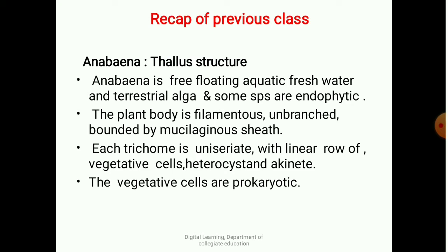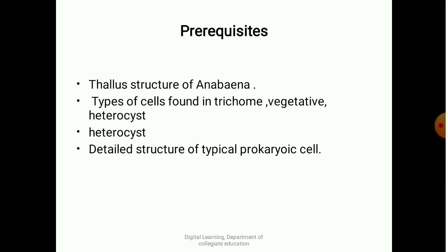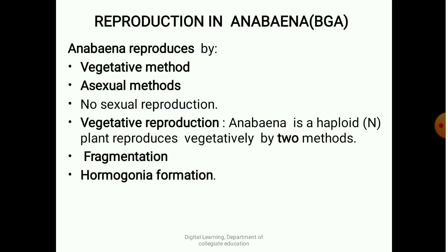Coming to the learning objective and learning outcome: the learning objective is to study the vegetative and asexual reproduction in Anabaena, whereas the learning outcome is to understand the different methods adapted by Anabaena. Coming to prerequisites, regarding the thallus structure of Anabaena, we have to notice the types of cells found in the trichome — vegetative cells, heterocysts — and the detailed structure of a typical prokaryotic cell.